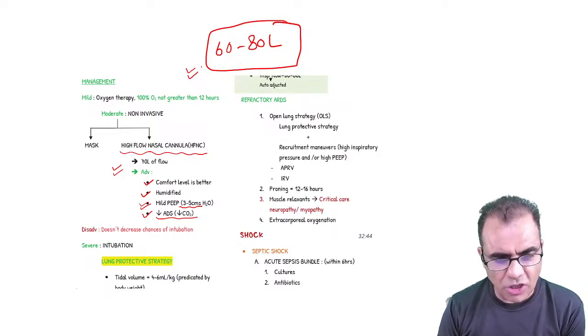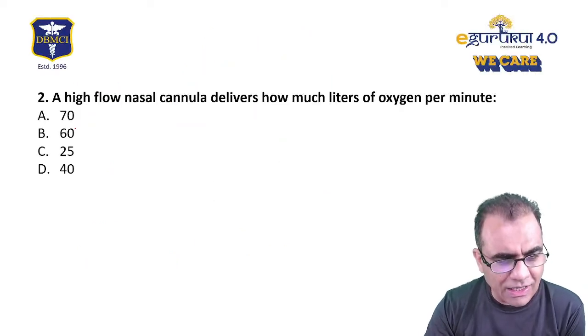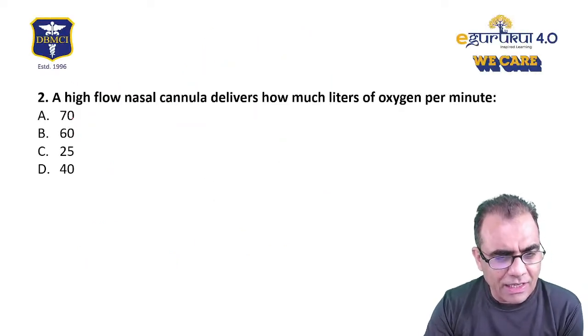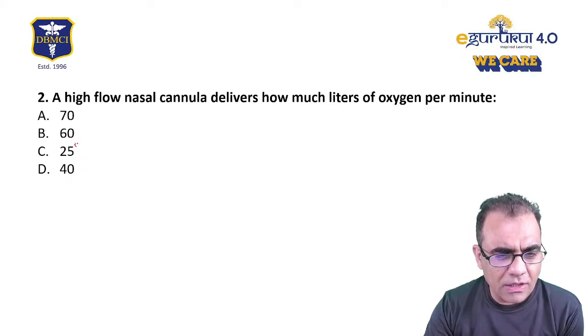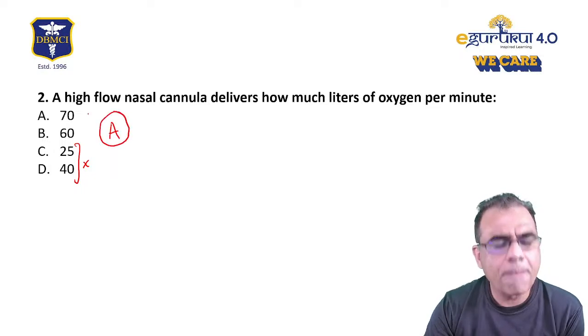Looking at the choices: 70, 60, 25, 40. Both 60 and 70 fall in the 60–80 range, but we'll go for 70 since the range is 60 to 80.